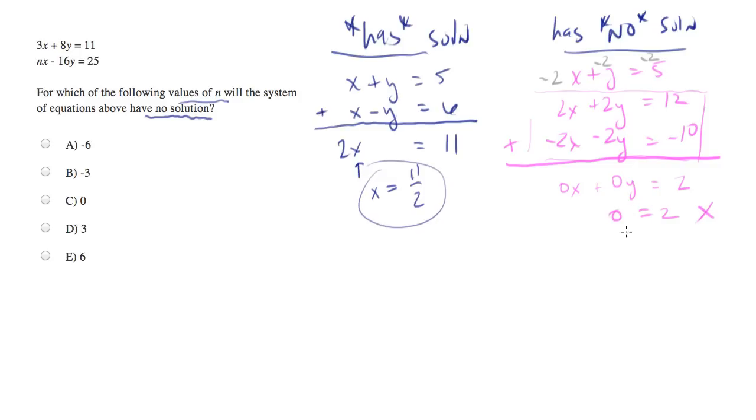When you end up with two numbers set equal to one another that are not true, this is the equivalent of saying this equation has no solution.